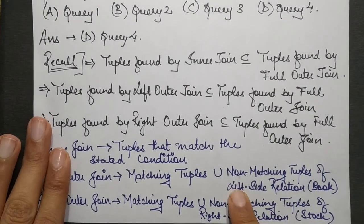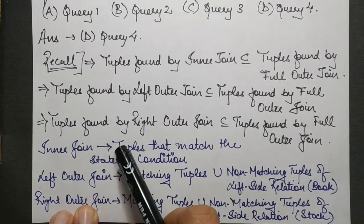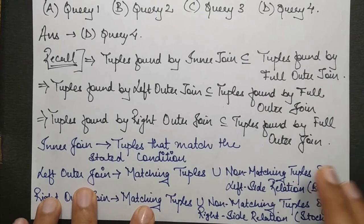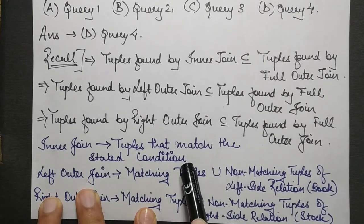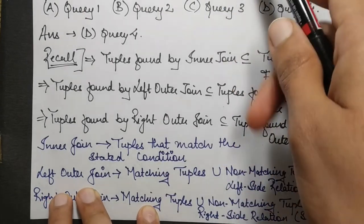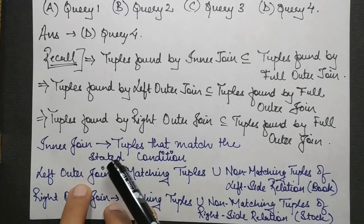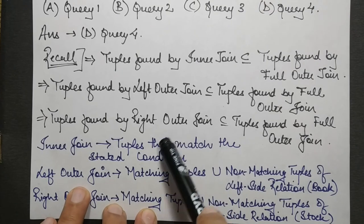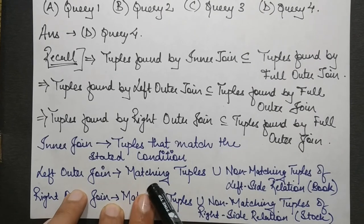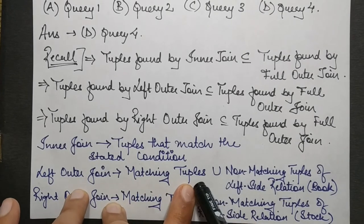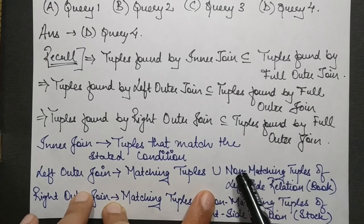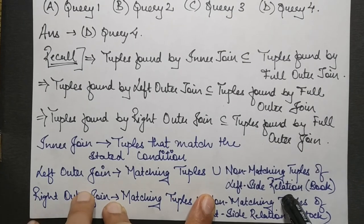Inner join is one in which you get only those tuples which match the stated condition, the equality condition in our case. Left outer join gives you the tuples which match the condition, that is the matching tuples, and also in addition it gives the non-matching tuples of the left-hand side relation, that is the non-matching tuples of the book relation in this case.